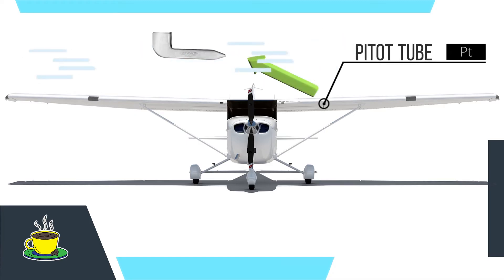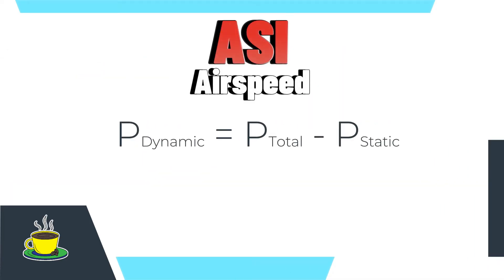The Pitot tube brings in the total air pressure while the static port brings in the static pressure. From these two data points we get a dynamic pressure.